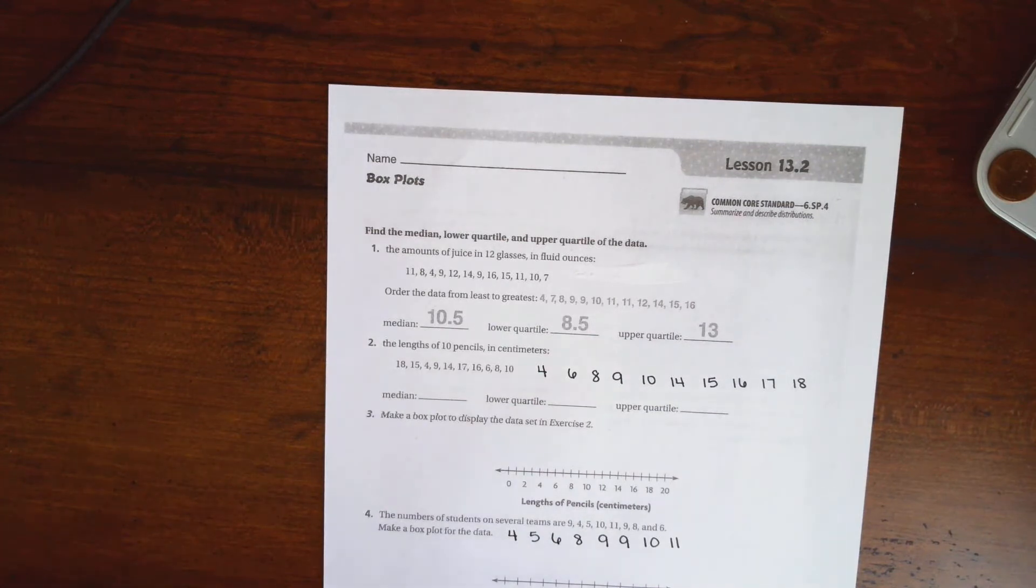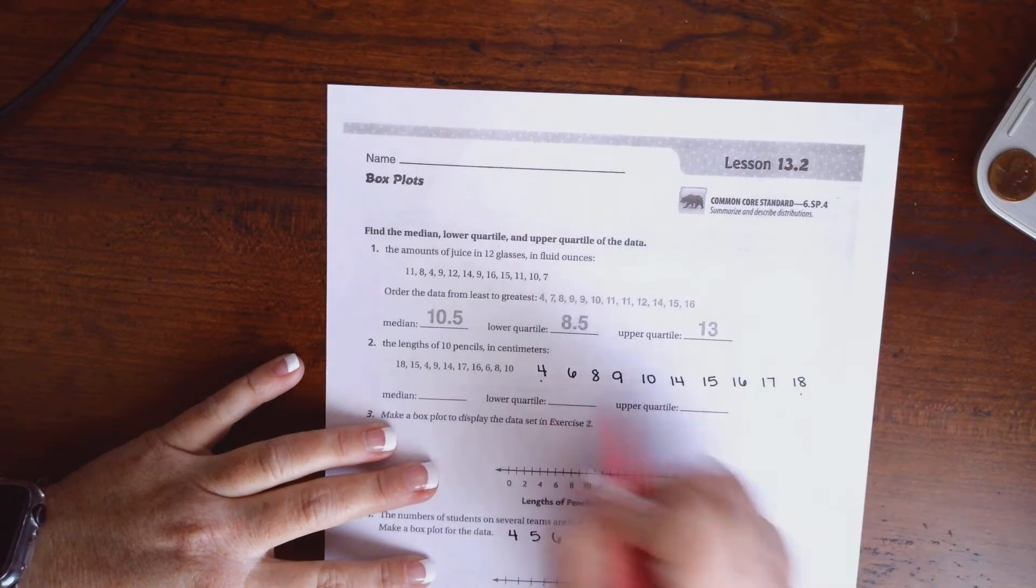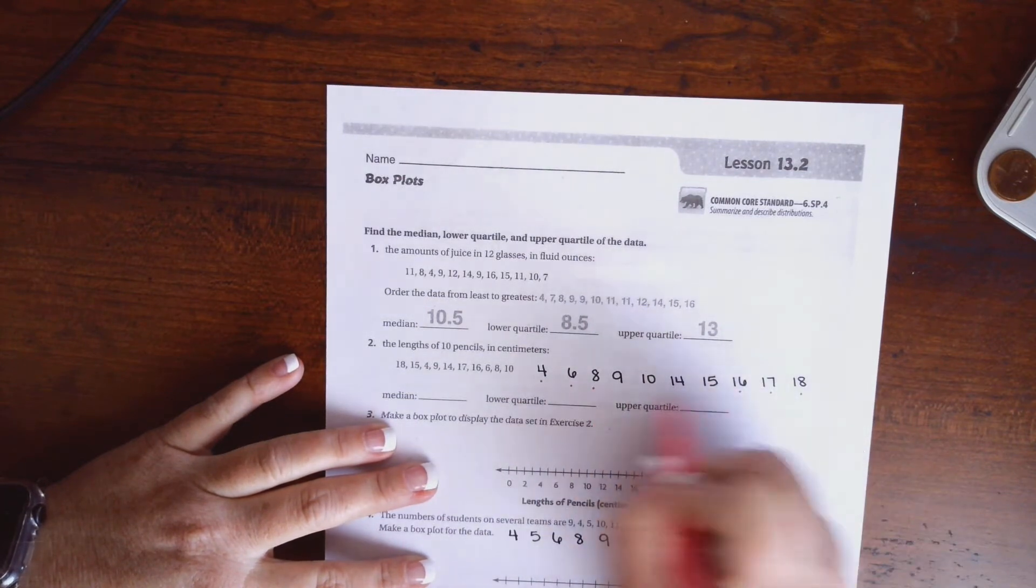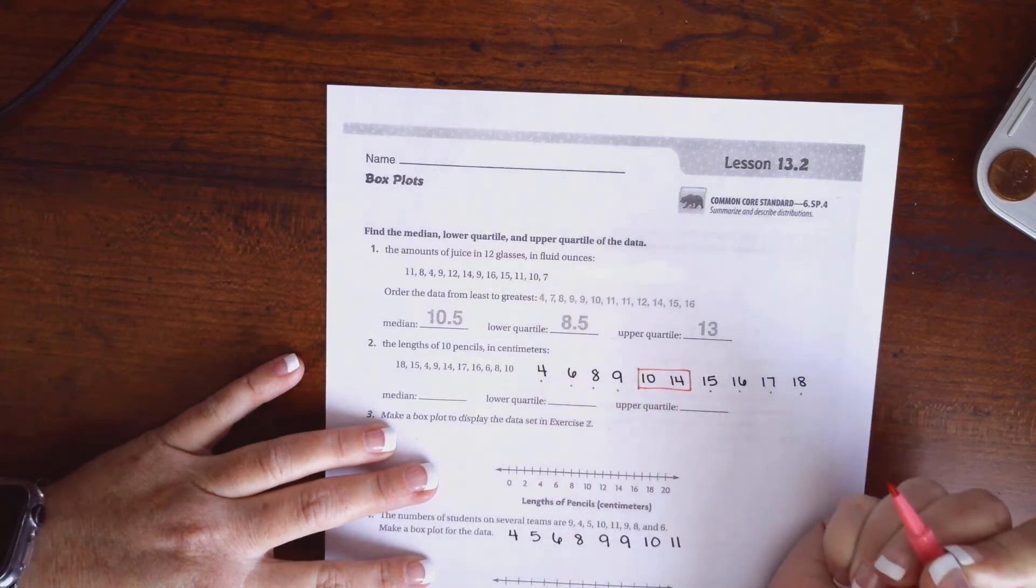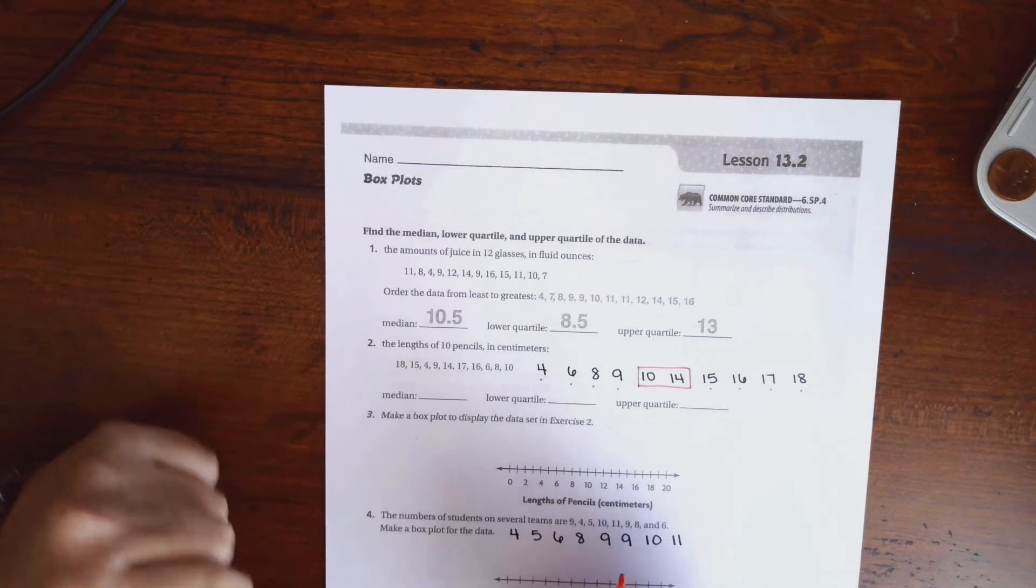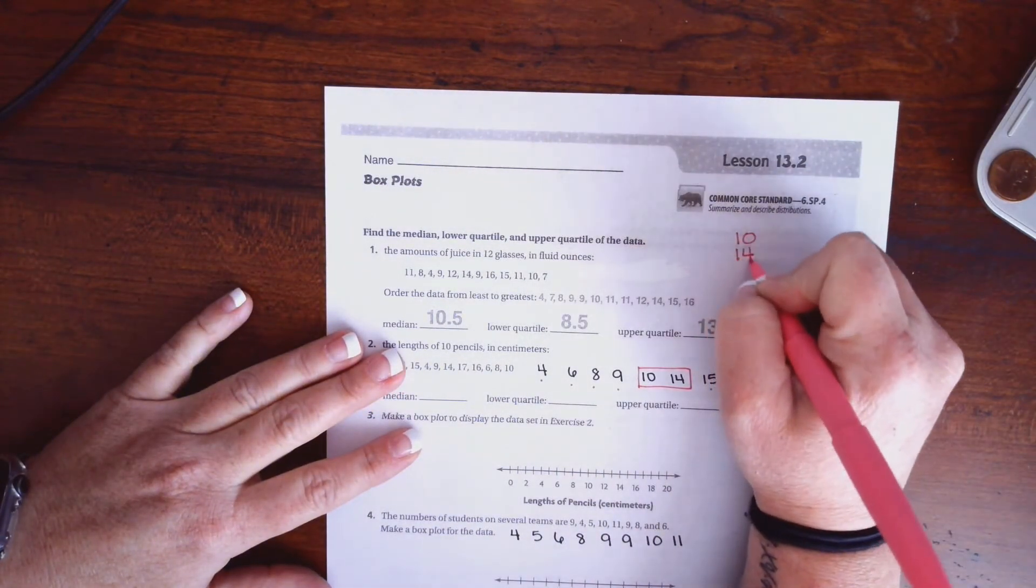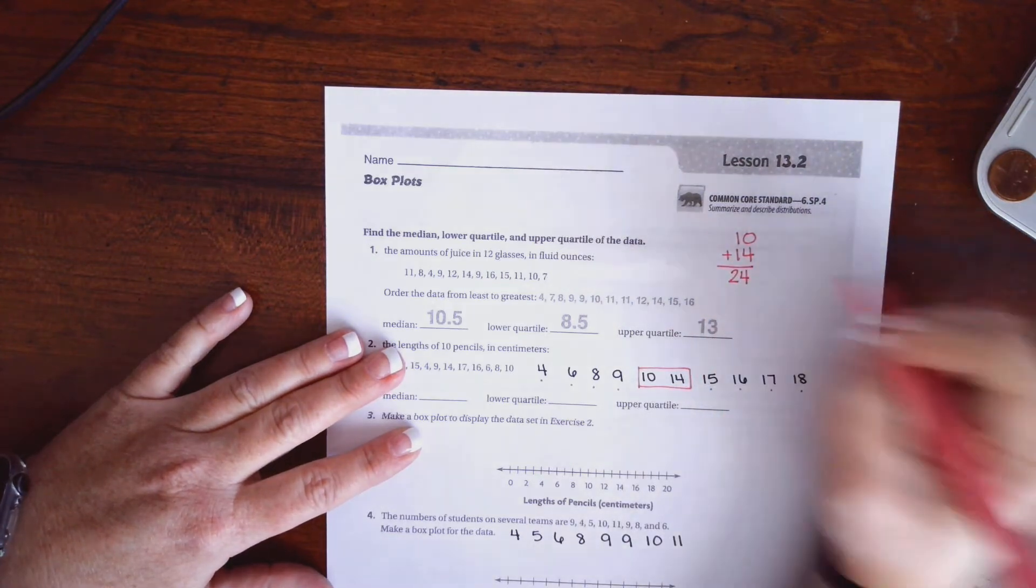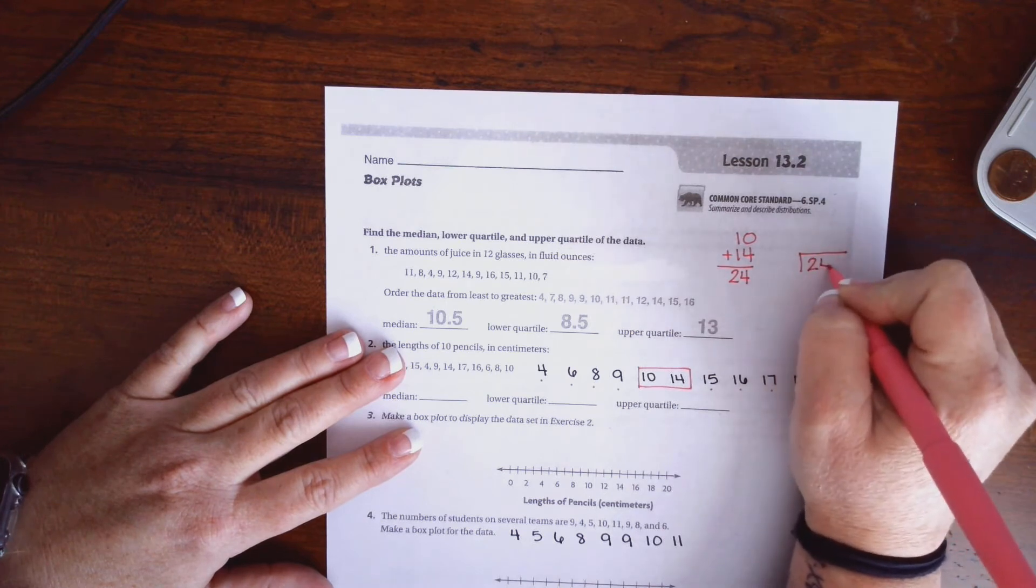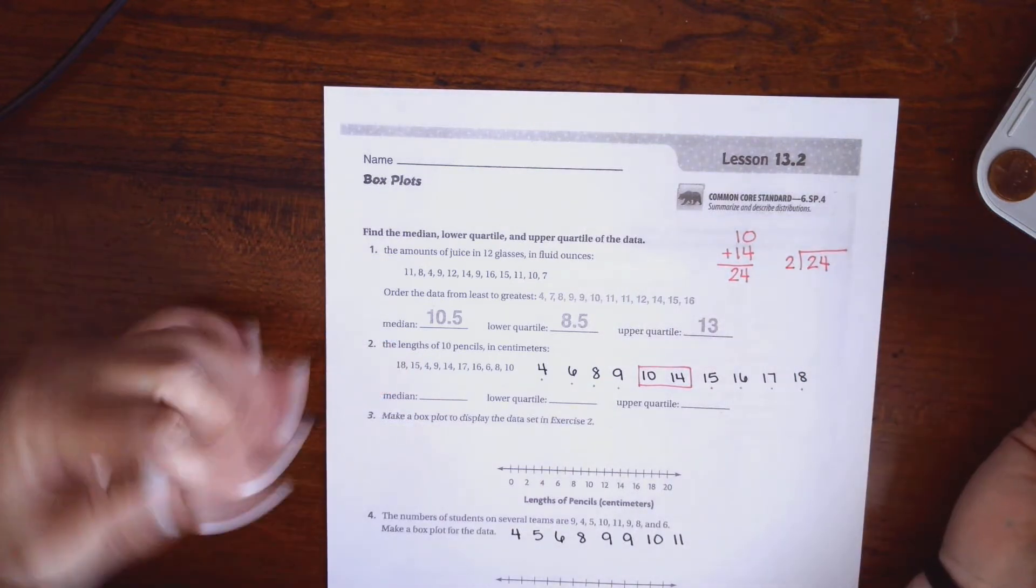We are going to first find the median, which is just the middle number. I'm going to put a dot under each side until I get to the one in the middle. So now I have two that are in the middle. In order to find out what the median is from those, I have to do 10 plus 14, so I'm going to add them together and get 24. Then I'm going to put that 24 in the box and divide it by two numbers to find the average for the mean of those two.